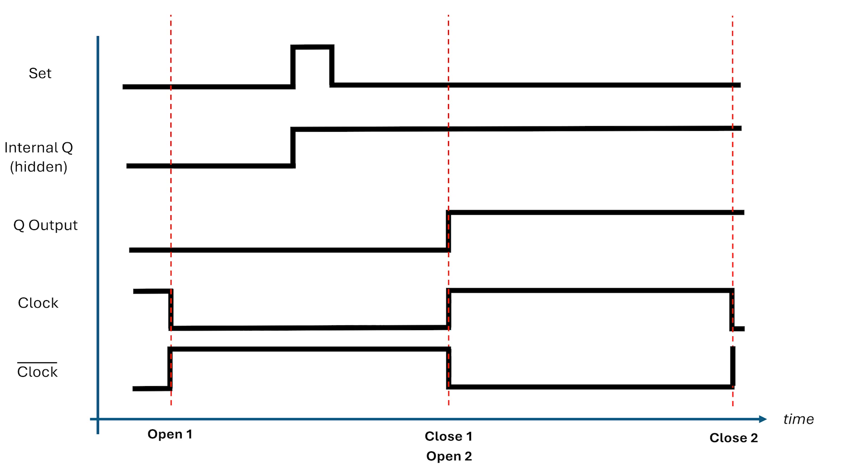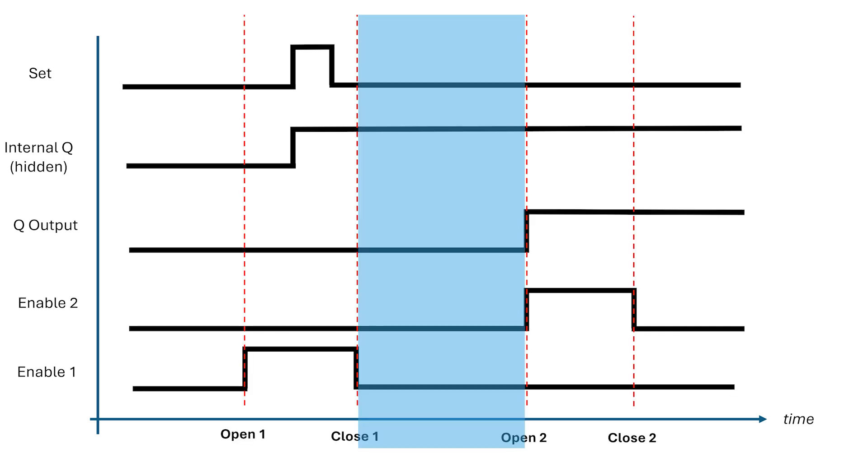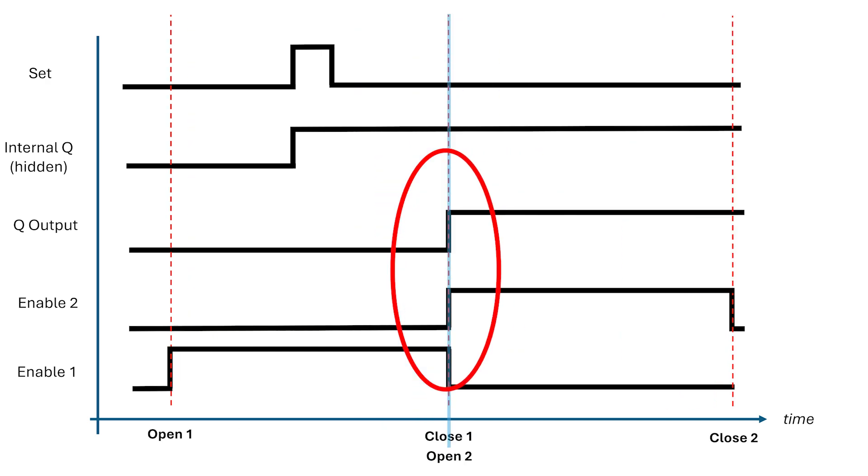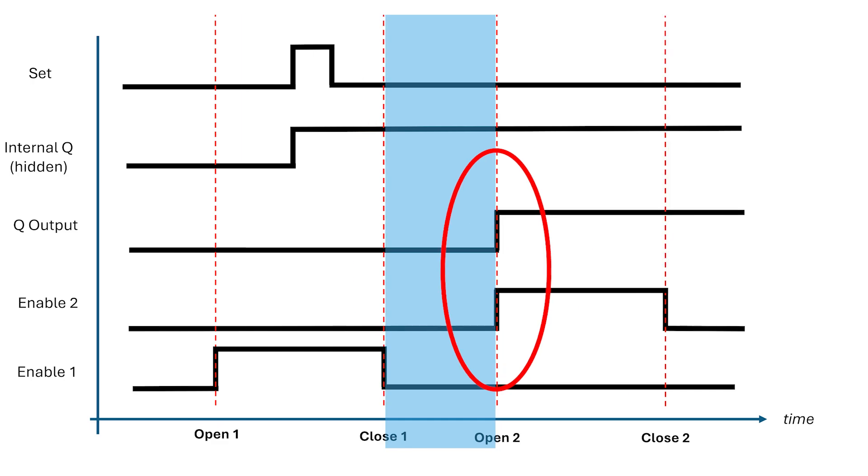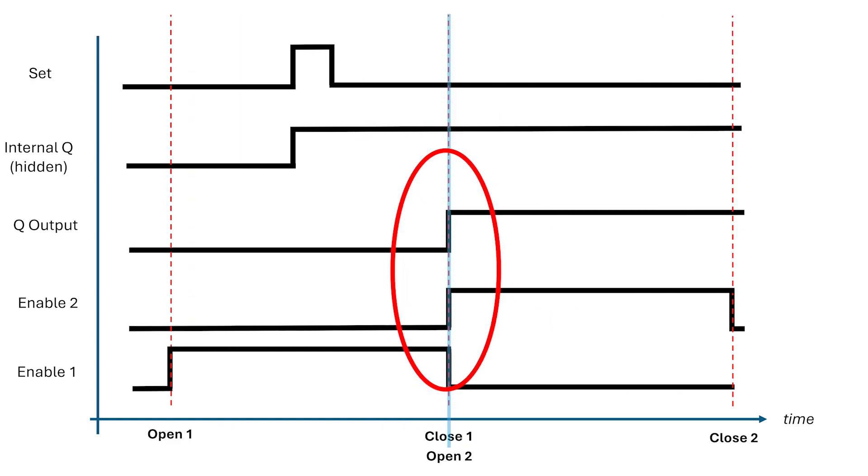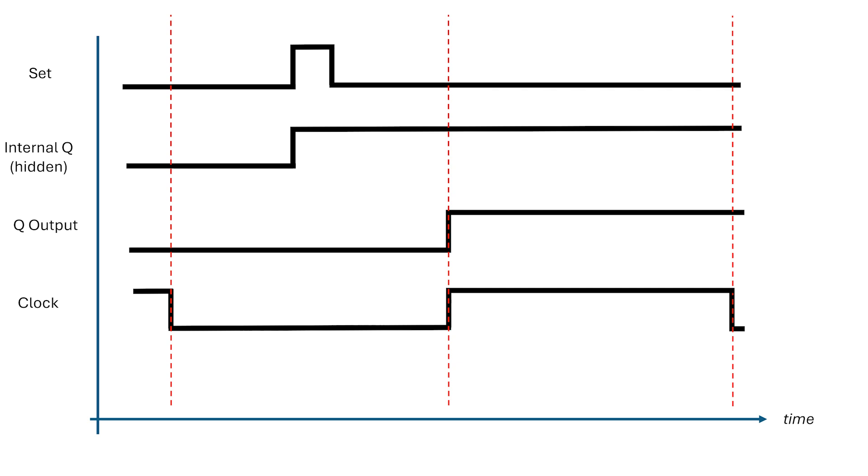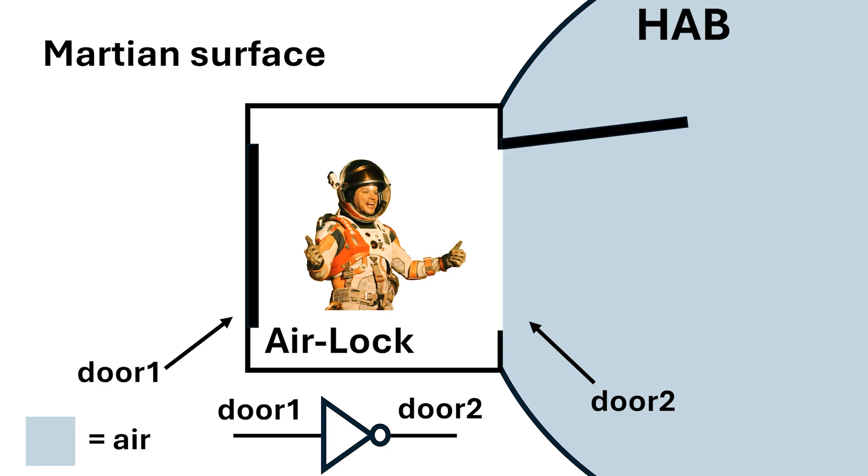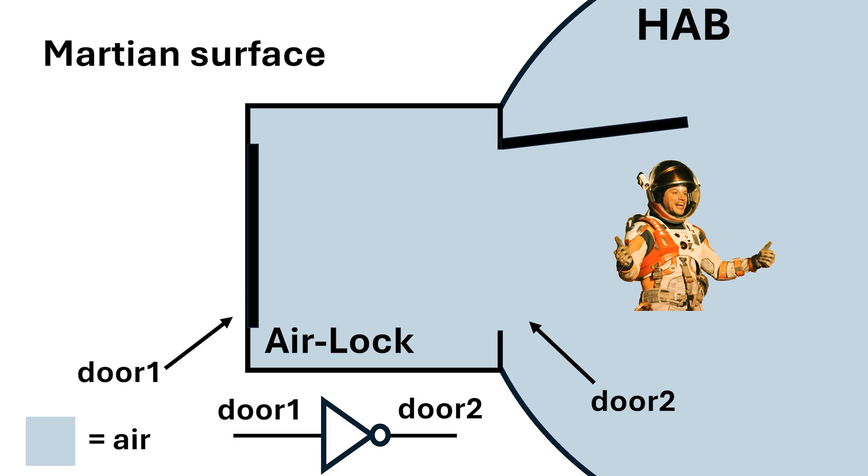Instead of enable, I'm going to call this signal clock and clock bar. Another thing I want you to notice is that the Q output moves as the position of enable 2 moves. Let me show you that again. Now, the Q output changes on the positive edge of the clock signal as it transitions from 0 to 1. For the airlock analogy, imagine we can instantaneously close door 1 and open door 2 at the same time. Then, the air in the HAB doesn't have time to escape and the airlock still works.